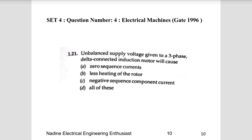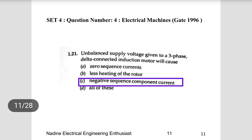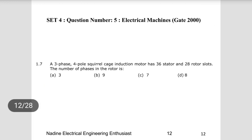Question 4: An unbalanced supply voltage given to a three-phase delta connected induction motor will cause what? An unsymmetrical voltage can be decomposed into positive sequence, negative sequence, and zero sequence components. An unbalanced supply voltage will normally have a negative sequence component, while earth fault values carry a zero sequence component. So Choice C is the right answer: it causes a negative sequence component current.